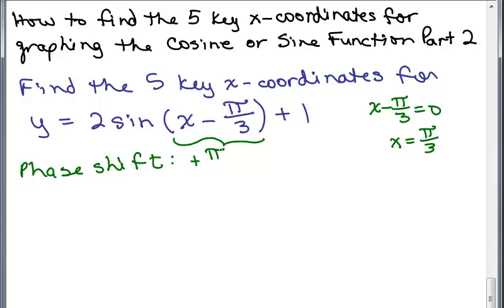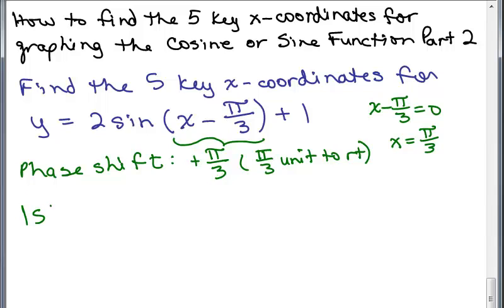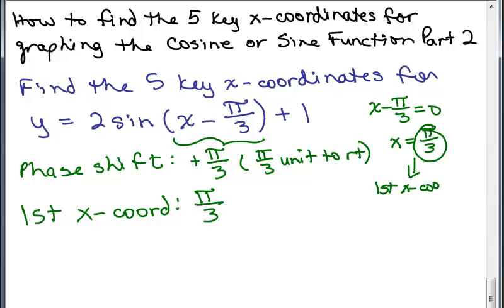You can think of this as plus pi over 3, which means pi over 3 units to the right. The phase shift means the first X coordinate moves pi over 3 units to the right. So the first X coordinate, instead of being zero as it normally is for just sine or cosine, will be the phase shift itself. If it were negative pi over 3, we'd put negative pi over 3. The first X coordinate is that number when you solve it — pi over 3.